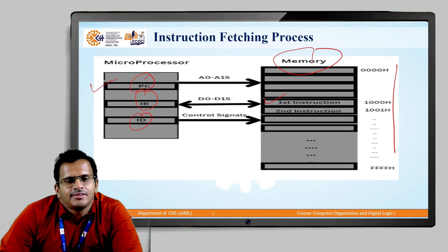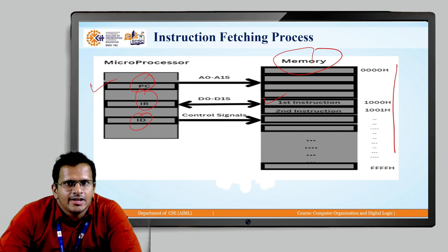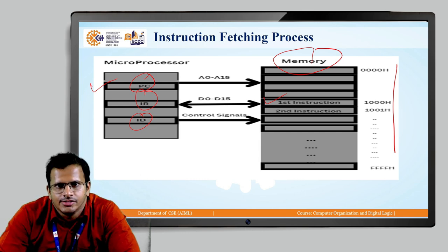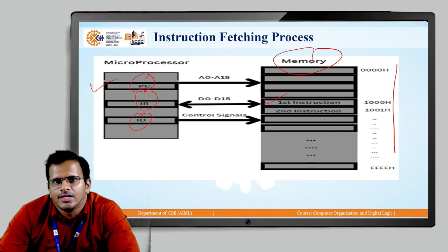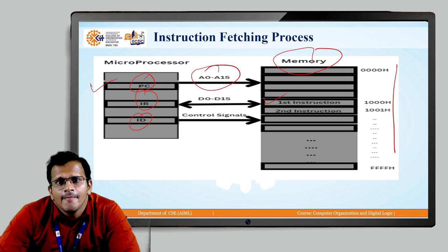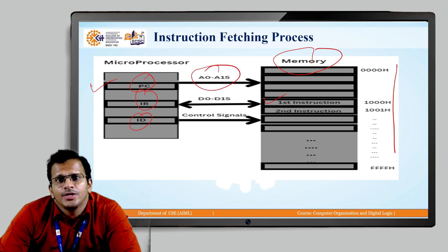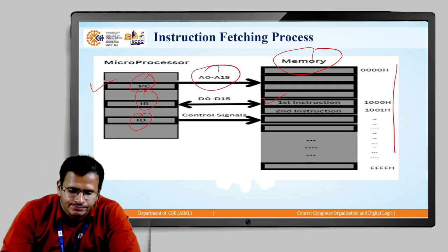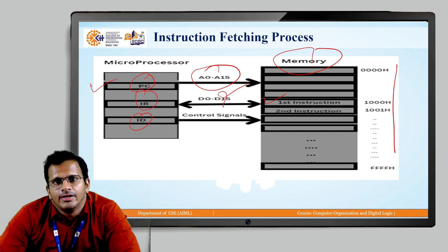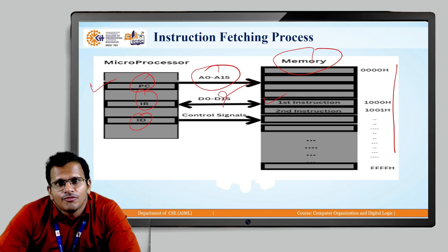As we had seen in the previous lecture, the address line is unidirectional and it is 16 lines wide, represented from A0 to A15. The data lines are D0 to D7, which are 8-bit and bidirectional.